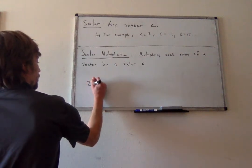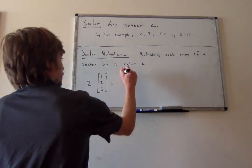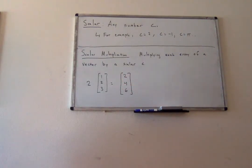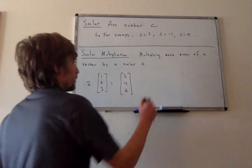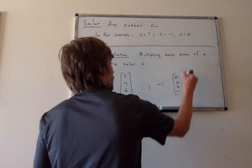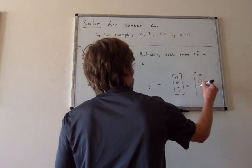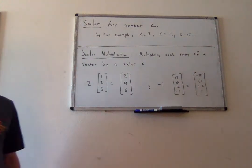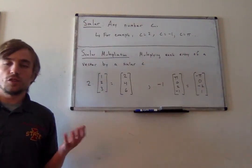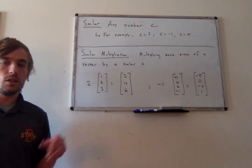For example, if my scalar was 2 and my vector was [1, 2, 3], this gives me the vector [2, 4, 6] — a new vector of length 3 where each entry has been multiplied by 2. Alternatively, I could do negative 1 times [pi, 0, 2, negative 1]. Scalar multiplication is just the process of scaling each entry of a vector, or simply multiplying each entry of the vector by a real number.